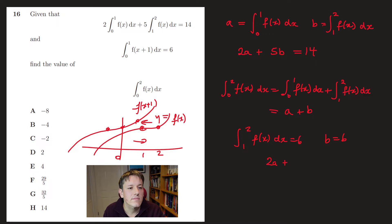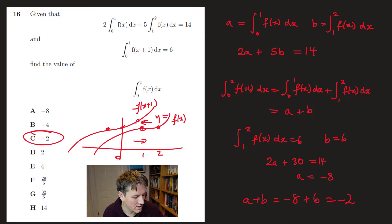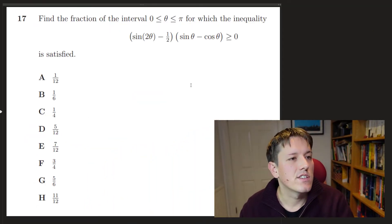With b = 6: 2a + 5b = 2a + 30 = 14, so a = −8. The answer we want is a + b = −8 + 6 = −2, so the answer is C.